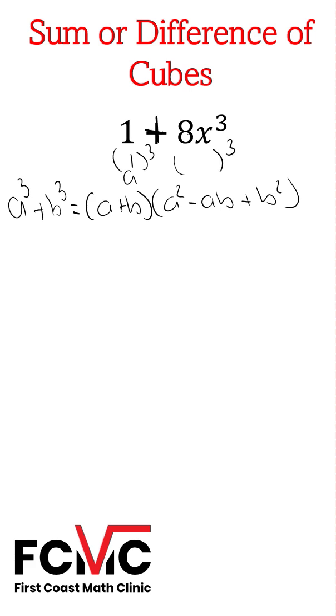What are we cubing to get 8x³? That's going to be 2x. That's our b value. We can replace a with one and replace b with 2x.